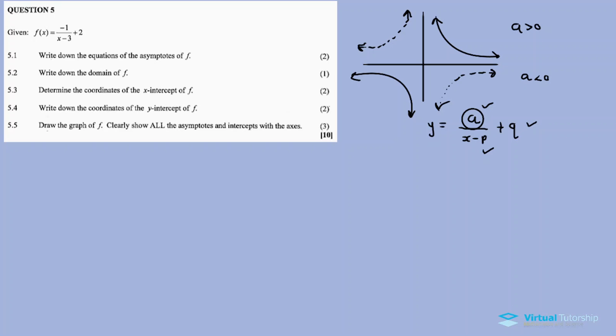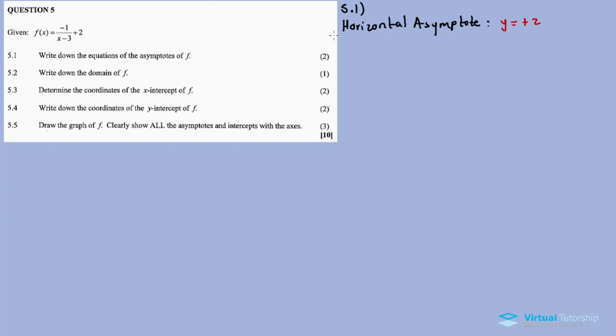The a tells us about the shape, the P and Q are the asymptotes. Question 5.1: write down the equations of the asymptotes of F. The asymptotes are y equals 2 and x equals 3.